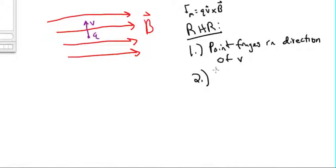The second is turn your palm to face B. So you're going to take your right hand still pointing the direction of V, but you're going to turn your wrist so that your palm will face towards B.